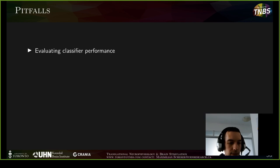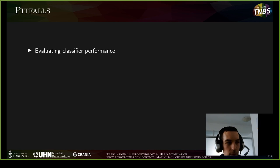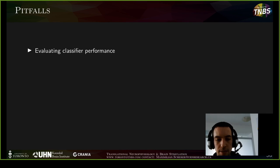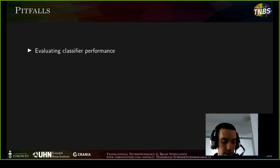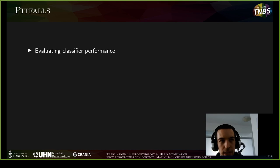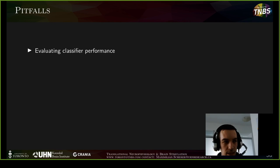The final topic is pitfalls to avoid in machine learning. First: always use cross-validation when evaluating classifier performance. If you train and evaluate on the same data and achieve 100% detection, you have no idea how the system would perform on data from a new patient. Always use a cross-validation approach — separate into training and non-training data sets and iterate.